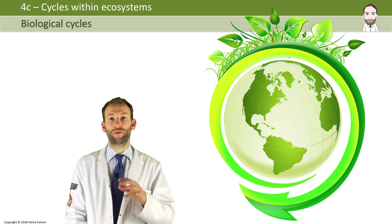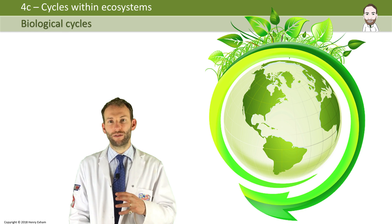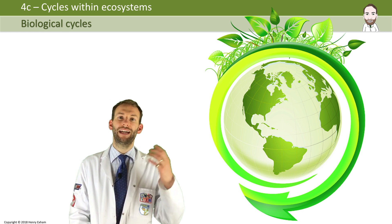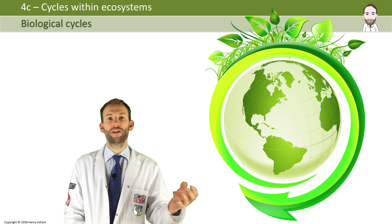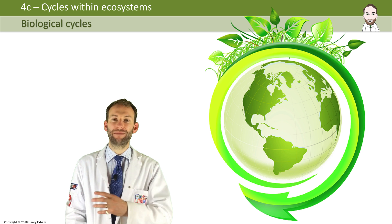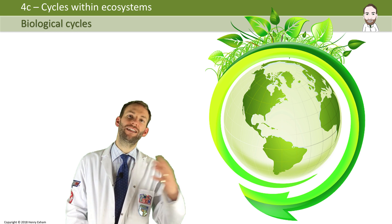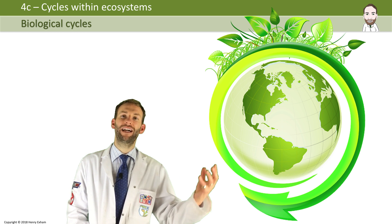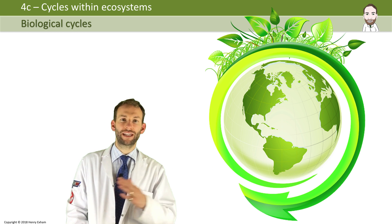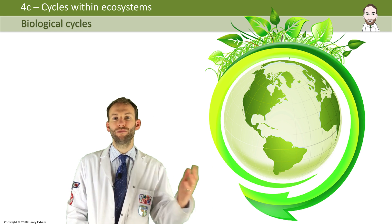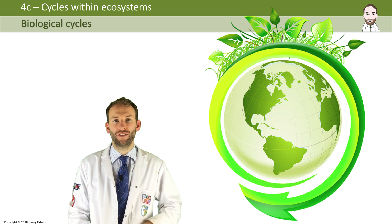Elements on the planet cycle between the living world and the non-living world. The elements may be in the air, the water, the soil, and the rocks, but they could end up getting back into living organisms, and then they might end up getting returned back to the air, soil, and rocks again. So elements can move between the living and the non-living.